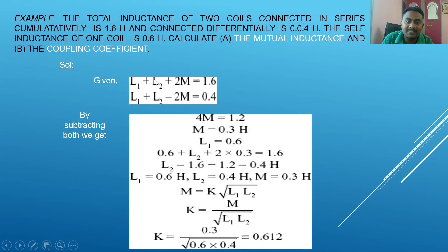Subtracting both equations: (L1 + L2 + 2M) − (L1 + L2 − 2M) — the L1 and L2 terms cancel, and the minus-minus gives plus, so 4M = 1.2, giving M = 0.3 H. Substituting L1 = 0.6 and M = 0.3 into the first equation gives L2 = 0.4 H.